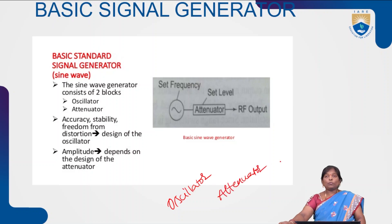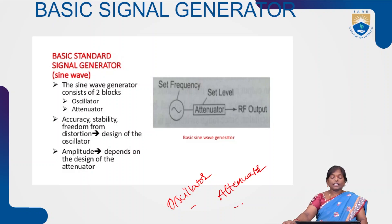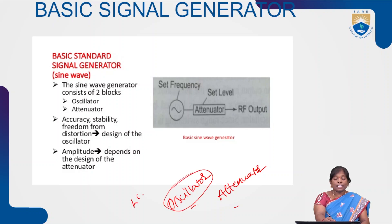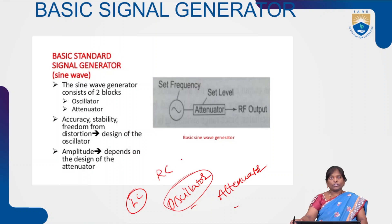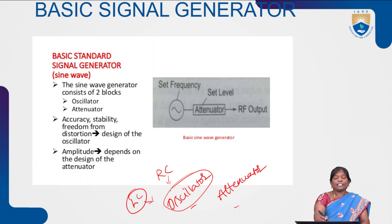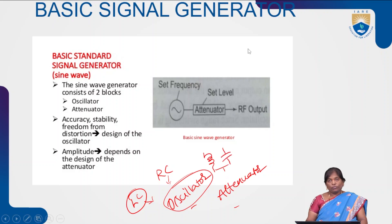The oscillator block is mainly used to maintain the constant frequency. To maintain the constant frequency, in this oscillator block we have either an LC tuned circuit or an RC tuned circuit. With the help of an LC or RC tuned circuit we can get a stable frequency, and by varying either inductance or capacitance we get the stable frequency.